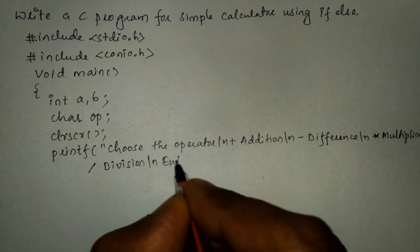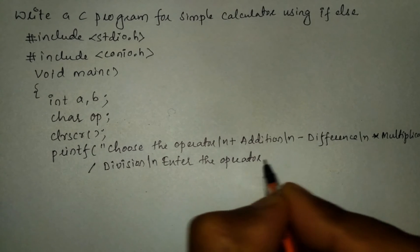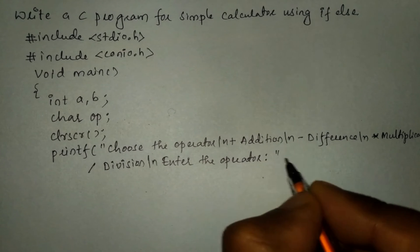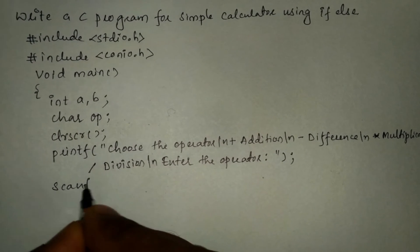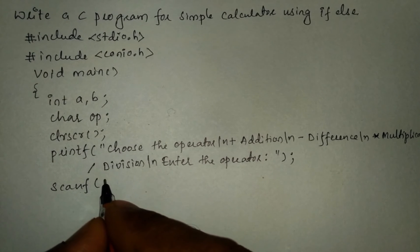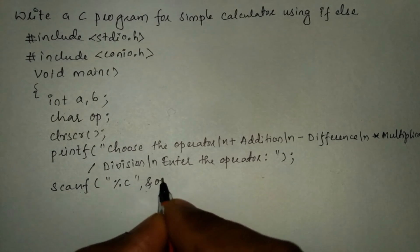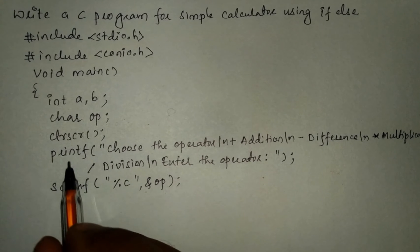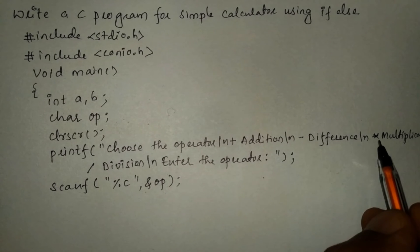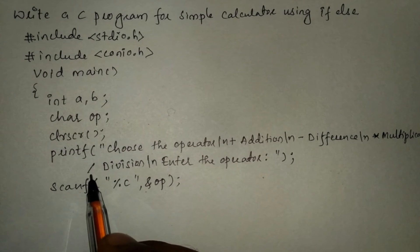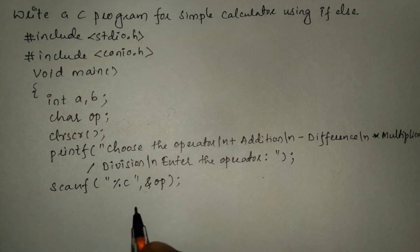In the same printf statement I am going to write 'enter the operator:' and close the bracket with a semicolon. We receive the response from the user through the keyboard using a scanf statement, writing percentage c as the format specifier with variable op. Since we are asking the user to enter either plus, minus, asterisk, or forward slash, it is of type character, so we use format specifier %c.